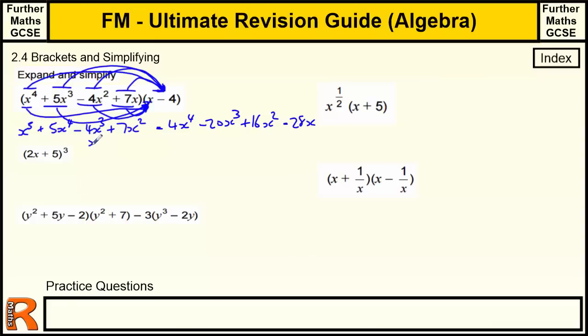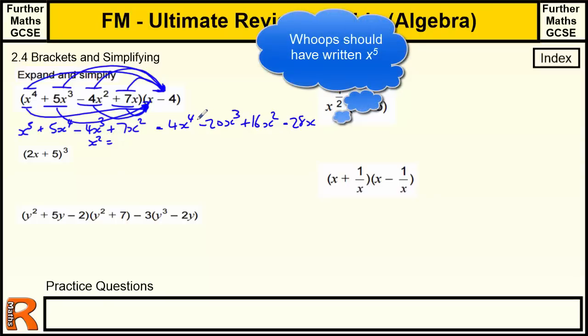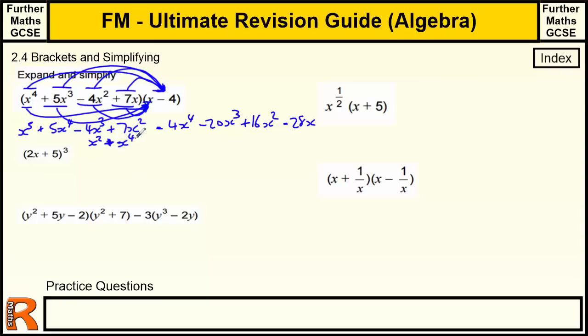Then we need to simplify it. We've only got one x⁵, so we've got x⁵. 5x⁴ minus 4x⁴ is x⁴, so we've got plus x⁴. Minus 4x³ minus 20x³ is minus 24x³. Plus 7x² plus 16x² is plus 23x². And we've got no x terms here, so we've just got that tagged on the minus 28x on the end. The most problematic thing with brackets are the negatives. Making sure you get the right signs. It's where most of the problems occur.